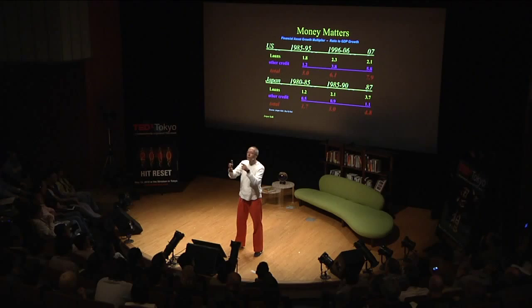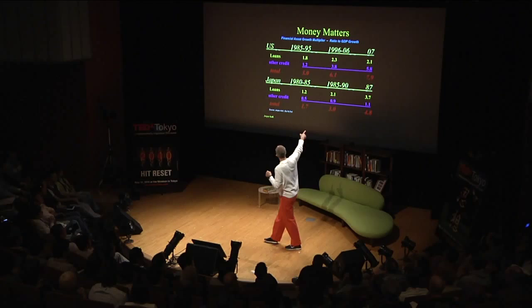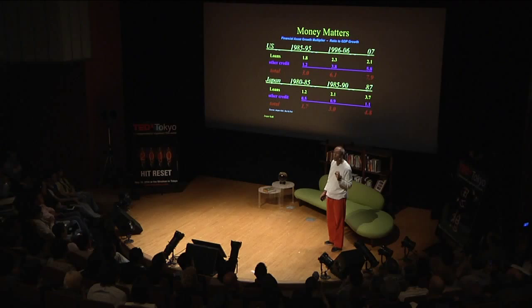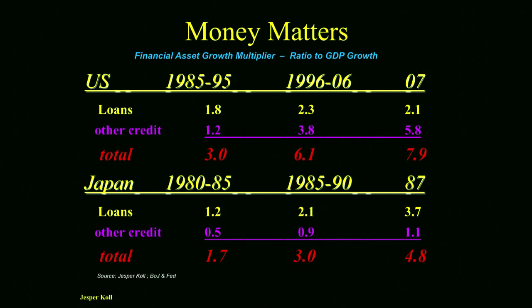You needed $3 for $1 of GDP, then $6, and at the peak of the American bubble economy, you actually needed almost $8 to make one unit of GDP. Contrast that to Japan: before the bubble, you needed 1.7 yen of finance to make 1 yen of national income; during the bubble that went to 3 yen, and at the peak it was almost 5 yen. So the fundamental economic forces were the same.